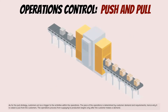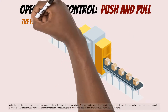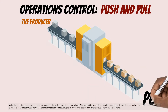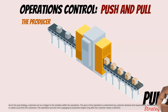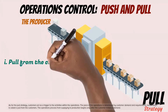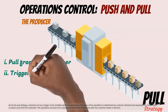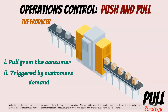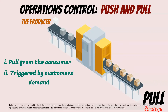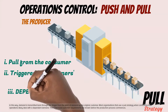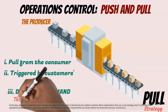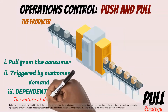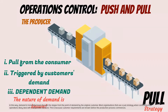As for the pull strategy, customers act as a trigger to the activities within the operations. The pace of the operations is determined by customer demand and requirements, hence why it is called a pull from the customers. The operations process from supplying to production begins only after the customer makes a demand, and that demand is transmitted back through the stages from the point of demand by the original customer. Most organizations that use a pull strategy likely deal with dependent demand, because customer requirements are known before the production process commences.